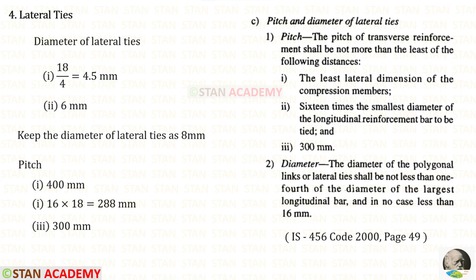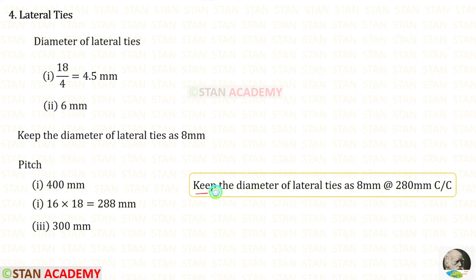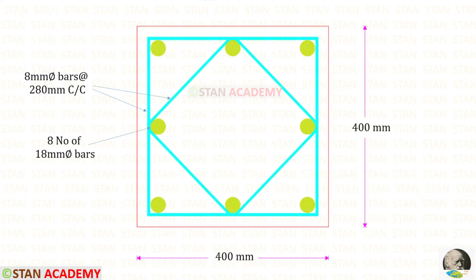Now we can design the diameter of the lateral ties and pitch as in the previous videos. Let us keep the diameter of the lateral ties as 8 mm in the spacing of 280 mm. Here you can see the cross section. Now we are going to end this session. Thank you for watching this video.